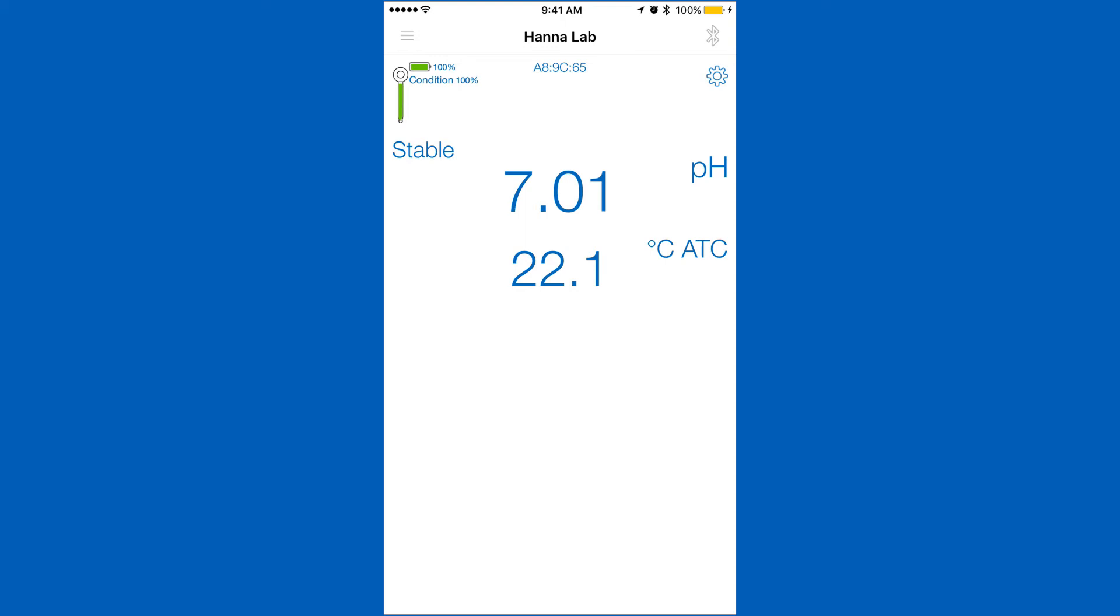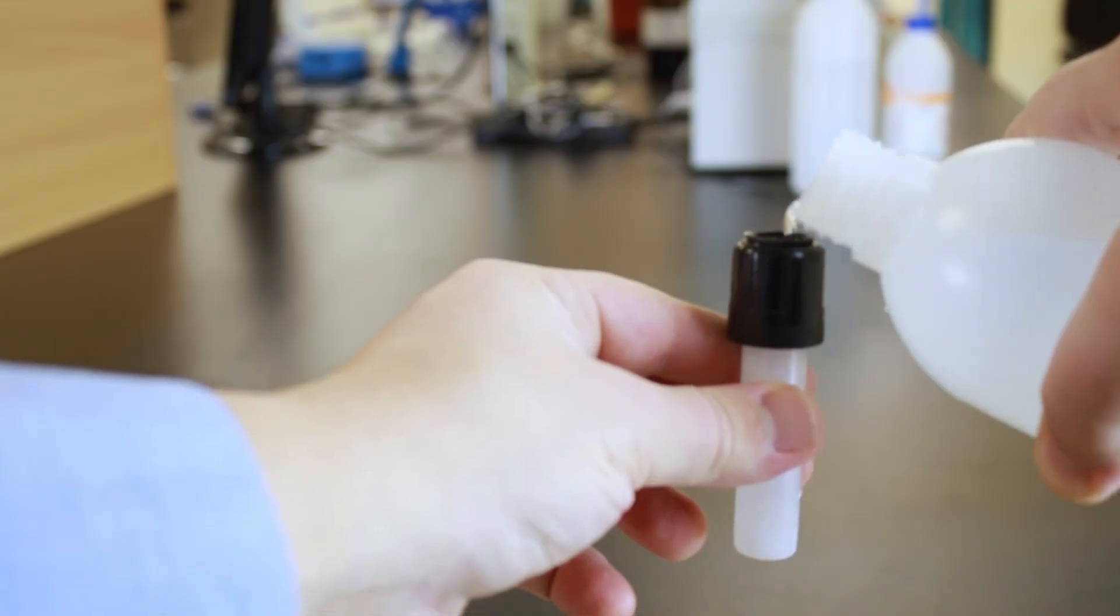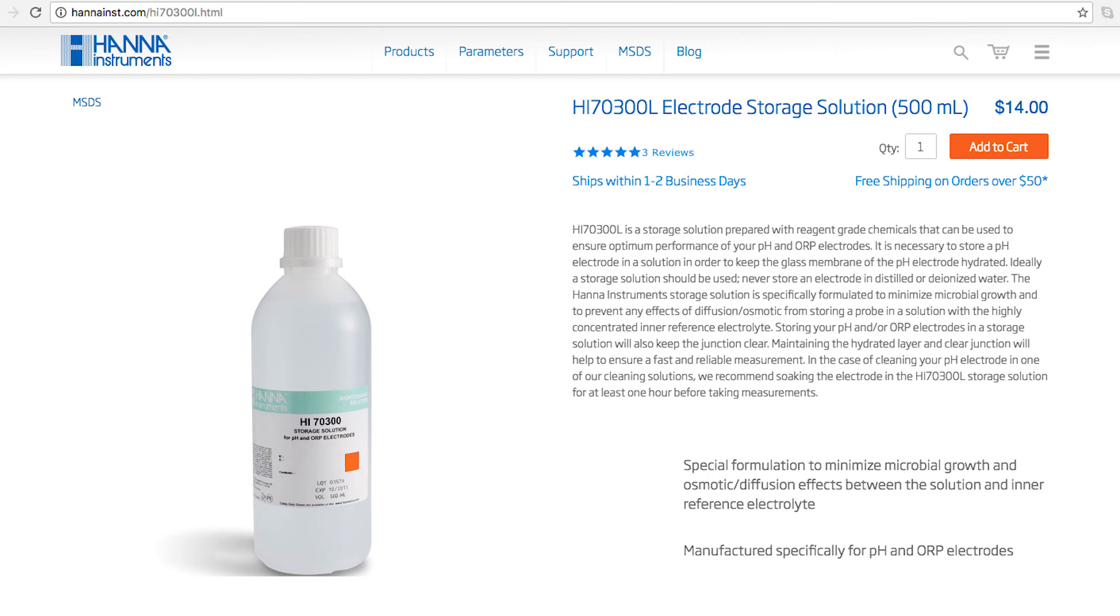When you're not using your pH probe, keep it in storage solution. Without proper storage, the electrode gets dehydrated. It's best if you rinse and store your electrode after every use. We recommend our HI70300 bottle of storage solution. If you don't have storage solution, pH 4 buffer works too.